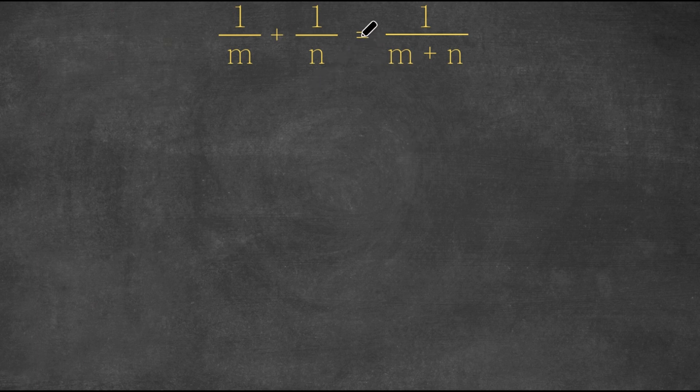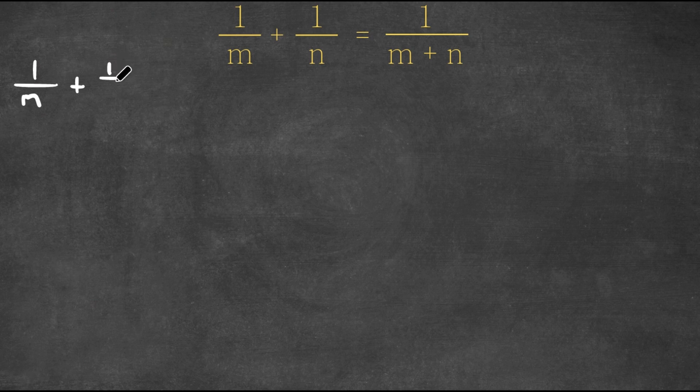So we have 1 over m plus 1 over n is equal to 1 over m plus n. Now let's first start by simplifying our left hand side here. Let's add 1 over m plus 1 over n.